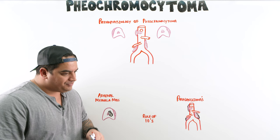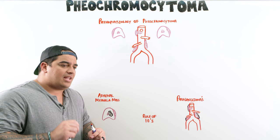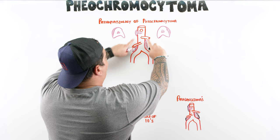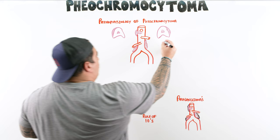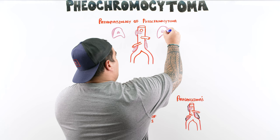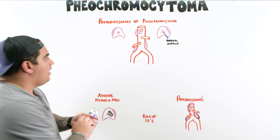Let's talk about pheochromocytoma — this is actually not too bad of a topic. The real pathophysiology behind this disease is that there is a source, usually a tumor, that is pumping out tons of catecholamines. The two sources where it usually comes from are the adrenal medulla and chromaffin cells that are usually around the aorta. The adrenal medulla is the inner center of the adrenal gland, and this is one source of catecholamine synthesis.